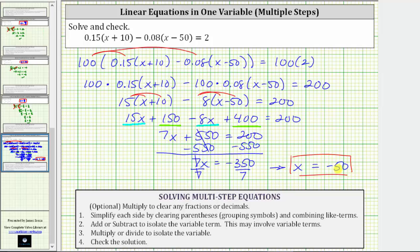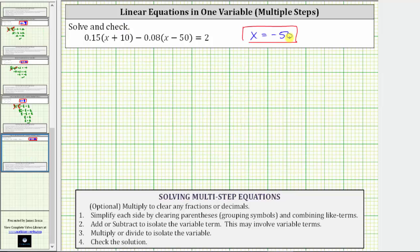But let's verify this by making sure it does satisfy the original equation. Substituting negative 50 for x in the original equation gives us 0.15 times the quantity negative 50 plus 10 minus 0.08 times the quantity negative 50 minus 50 equals 2. Simplifying inside the parentheses on the left side, negative 50 plus 10 is negative 40. Negative 50 minus 50 is negative 100.